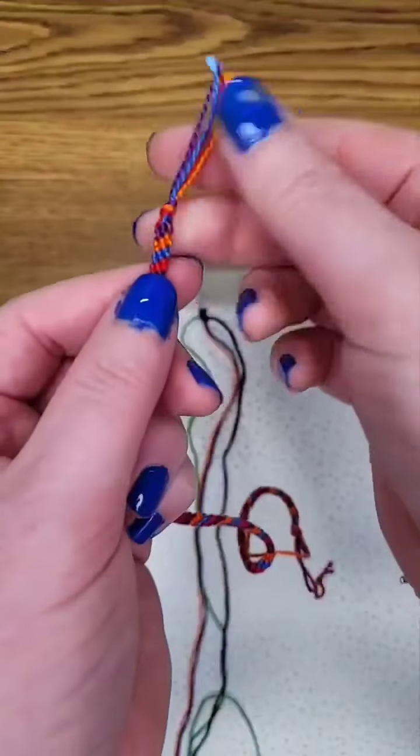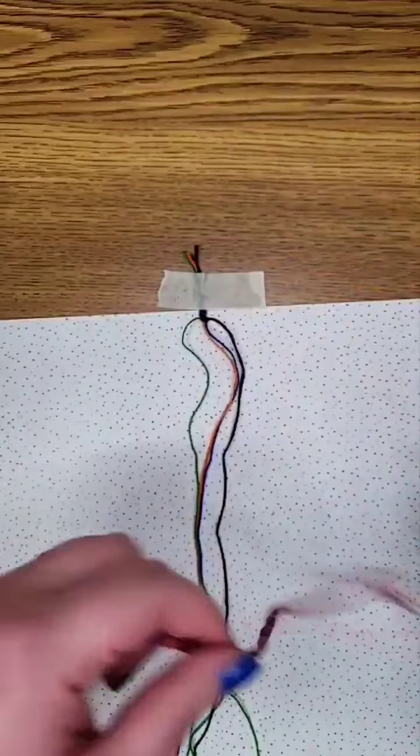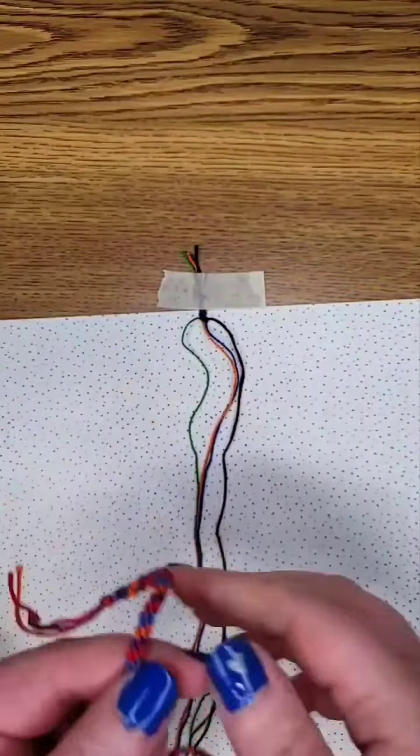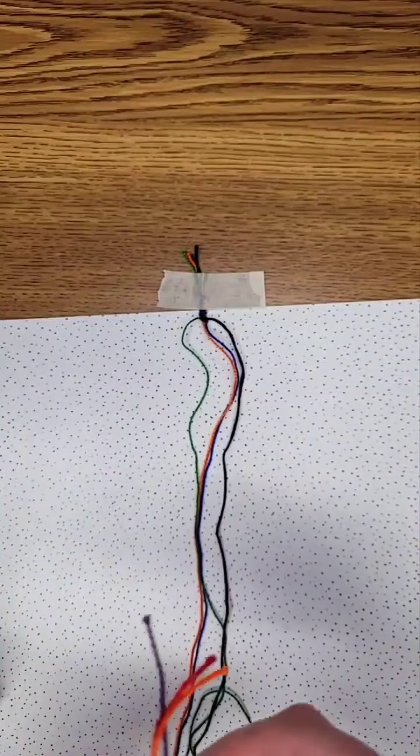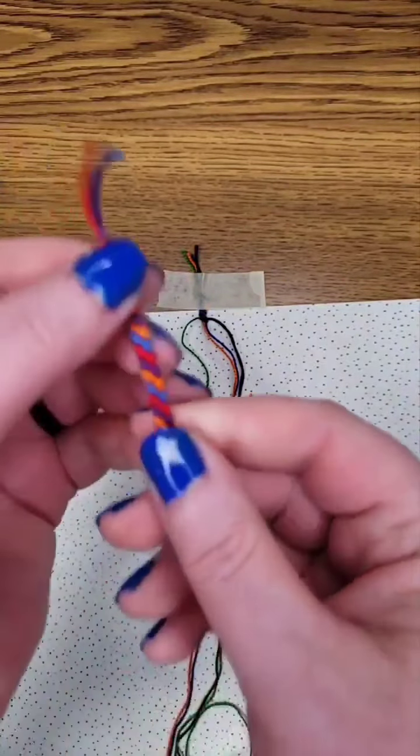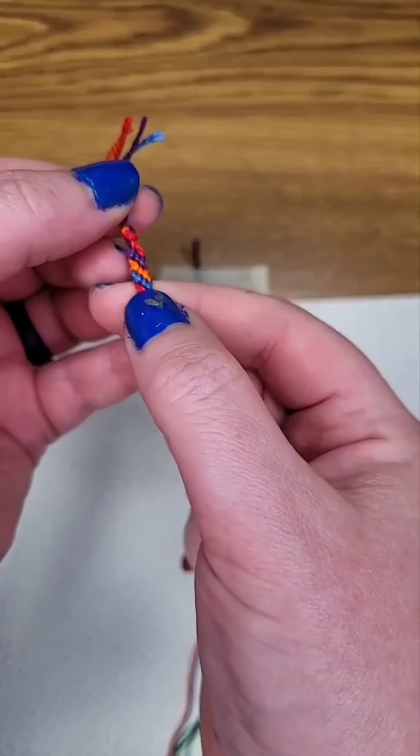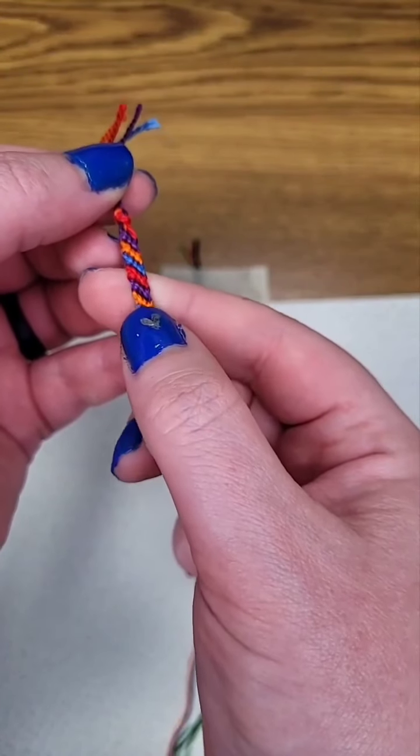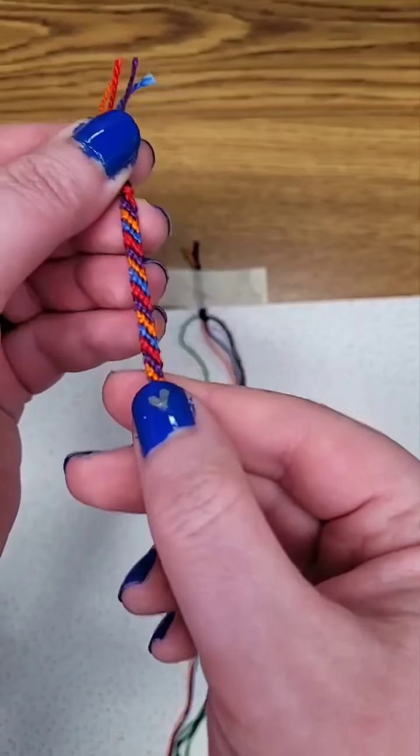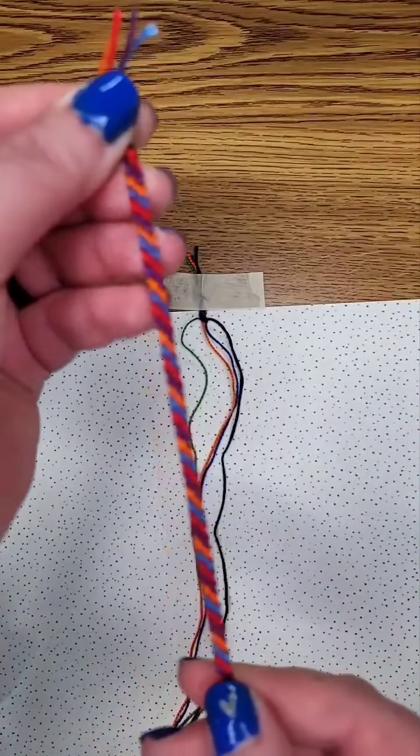So in this completed one, you can see. So I started with purple, then orange, blue, then red. Purple, orange, blue, red. So you'll get four colors at a diagonal.